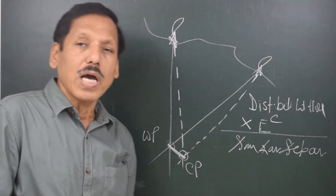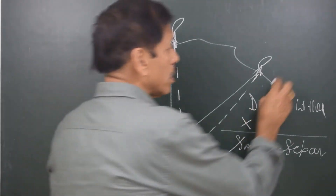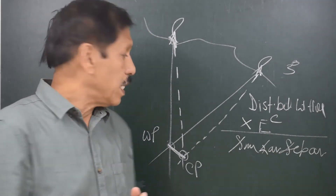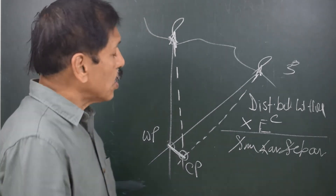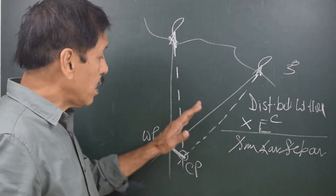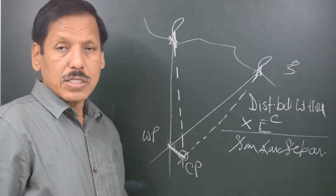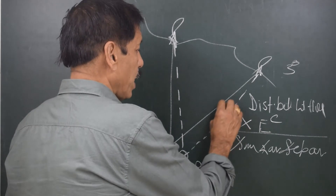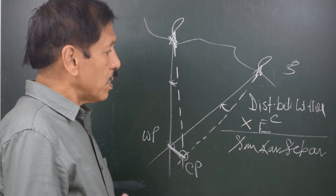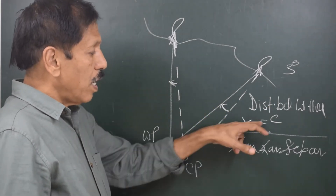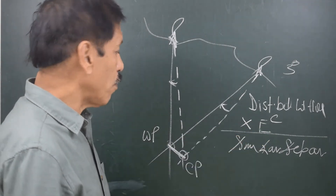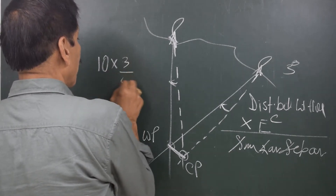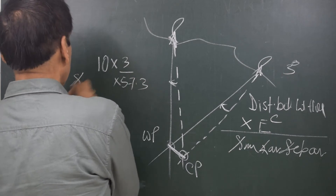For example, suppose the distance between the two lighthouses is 10 miles and the error in the bearing is 3 degrees — a similar error that shifts the bearing clockwise or anti-clockwise. The shift in position would be 10 miles × (3 ÷ 57.3) ÷ sine of the angular separation. If the angular separation is 35 degrees, the answer is 10 × (3 ÷ 57.3) × sine(35°).